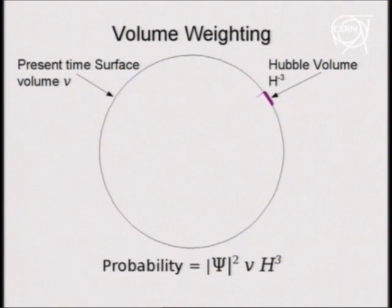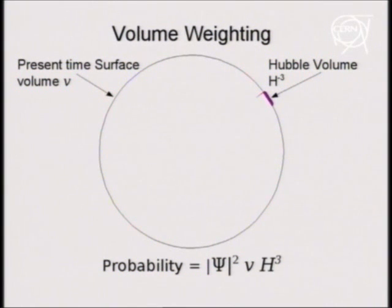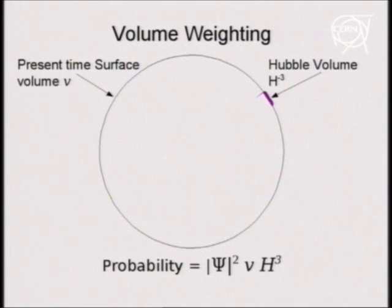There will be many such patches on the final surface. Thus, the probability distribution for the initial field phi 1 will be the wave function squared, times the weighting factor of the volume of the present universe divided by the present Hubble volume.